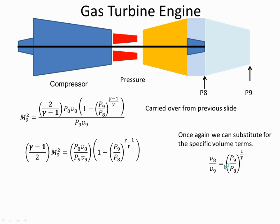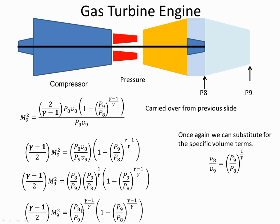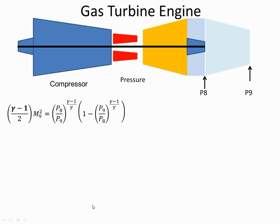So I can substitute this for V8 over V9. And once again, I have P8 to the power of gamma over gamma divided by P8 to the power of 1 minus gamma. So that's going to give me P8 over P9 to the gamma minus 1 over gamma. Bring this forward to the next slide.